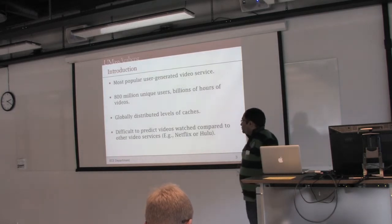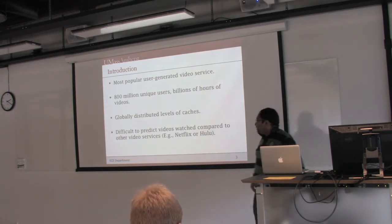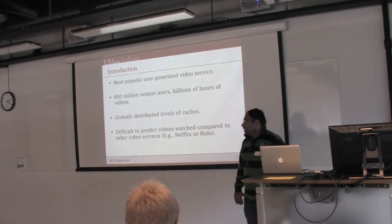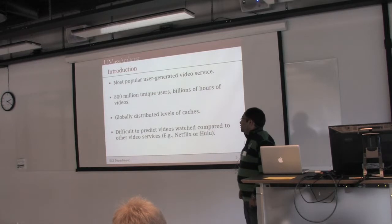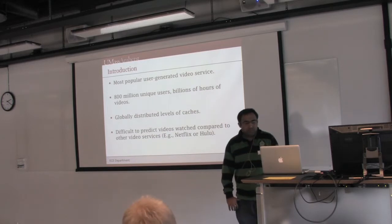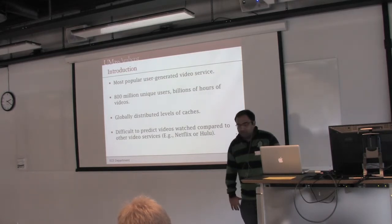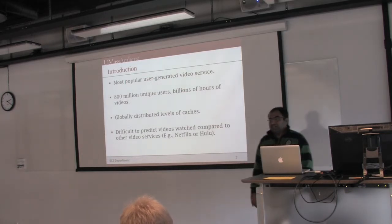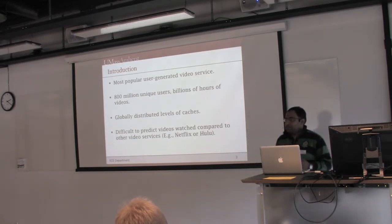YouTube is the most popular internet video service, as everyone uses daily. People spend billions of hours on YouTube watching videos a month, and it consists of 800 million unique users. To serve these huge requests and high bandwidth, Google uses globally distributed levels of caches around the world to reduce the latency of requests. Delivering content using these caches is tough because YouTube has a drip-like distribution where certain videos are very highly popular and a huge number of videos have very low popularity, constituting a long tail.